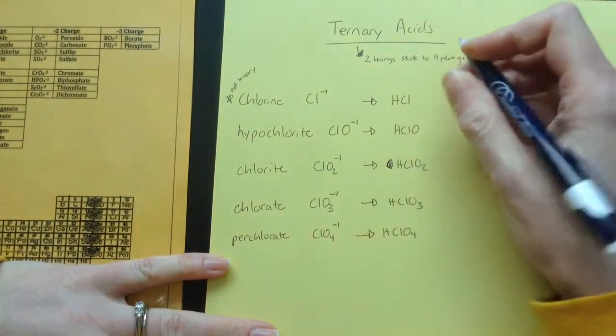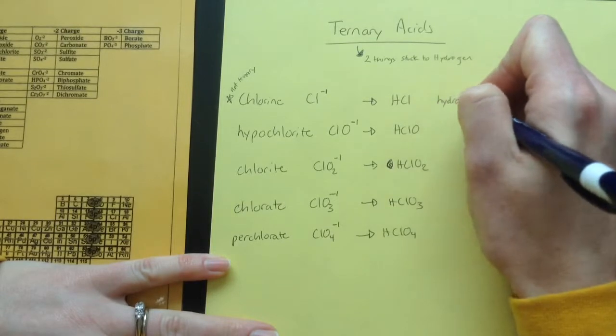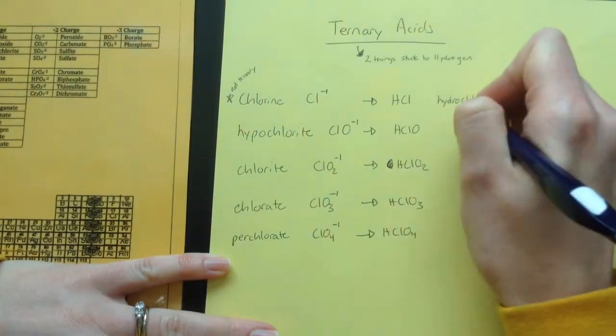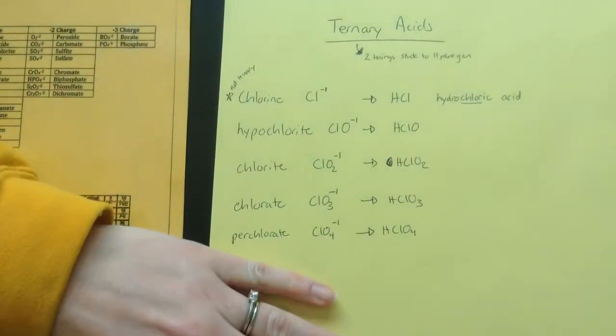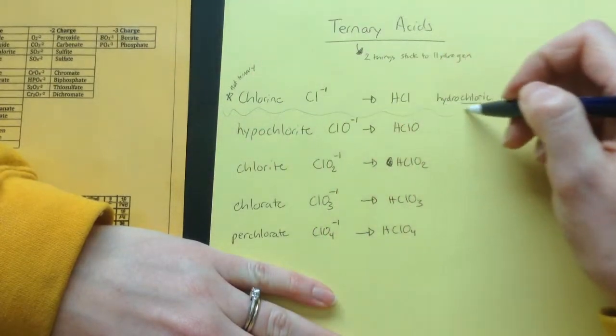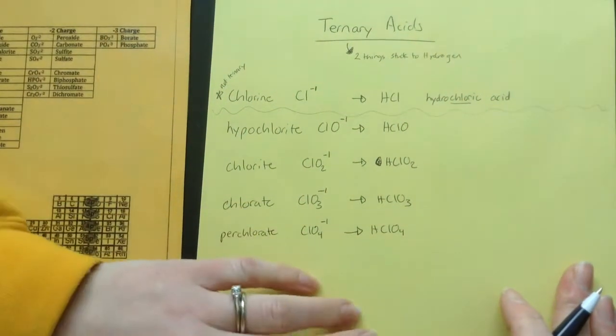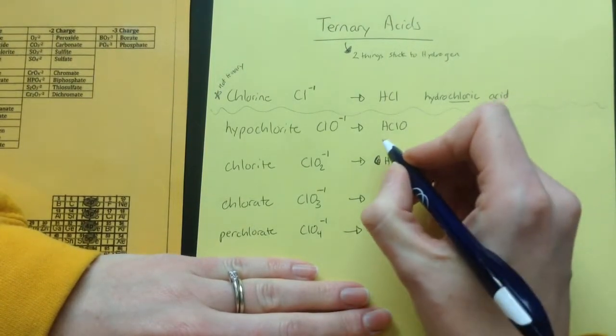And the way we name these guys, remember we talked about this binary one, we take the hydro, and then we add the chlor, and then we change the N to ic, and then add acid. So there's the chloric right there. The way that we name the binary acid, I'm going to draw a little line here because it's a little bit different, and then you'll see some common patterns here.